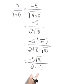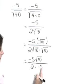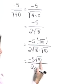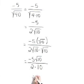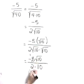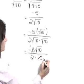I'm going to go ahead and cancel common factors. Don't cancel this 10 with the 10 underneath the radical. We can't do that, but we can cancel with these values that are outside the radical. 5 goes into itself once and into 10 twice.